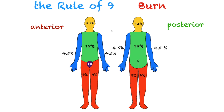As you can see, the numbers are easy to remember because they are all divisible by nine. If we add up everything — anterior and posterior — we should have a total of 100%. Head front and back: 4.5 plus 4.5 equals 9%. Trunk front and back: 18 plus 18 equals 36%. Upper extremities: 4.5 times four equals 18%. Perineal area: 1%. Lower extremities: 9% each, totaling 36%. All together that gives us 100%.